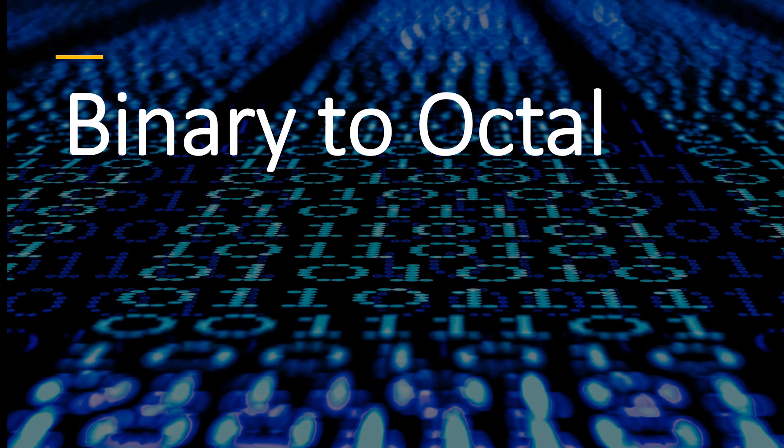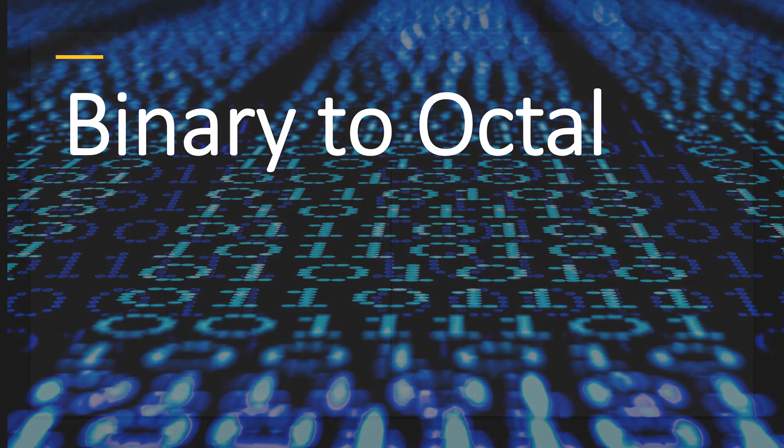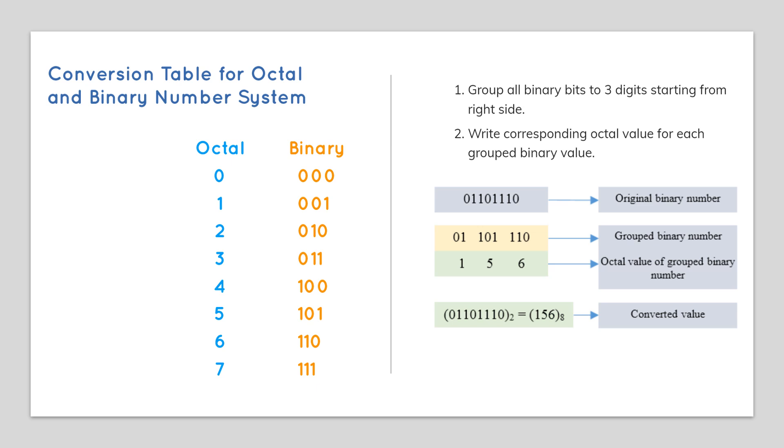Converting binary to octal numbers. Group all binary bits to 3 digits starting from right side. Write corresponding octal value for each group binary value according to the table.